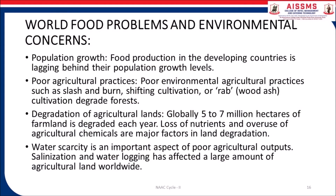Let us understand various world food problems and environmental concerns. Population growth — food production in developing countries is lagging behind population growth levels. Poor agriculture practices such as slash and burn, shifting cultivation, which degrades forest. Degradation of agricultural lands — globally, 5 to 7 million hectares of farmland is degraded each year. Loss of nutrients and overuse of agricultural chemicals are major factors in land degradation.